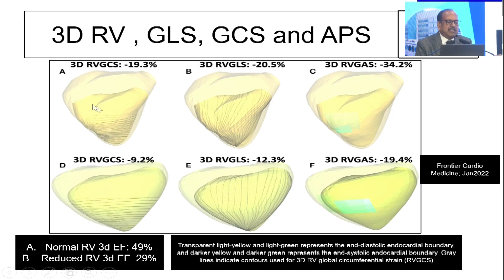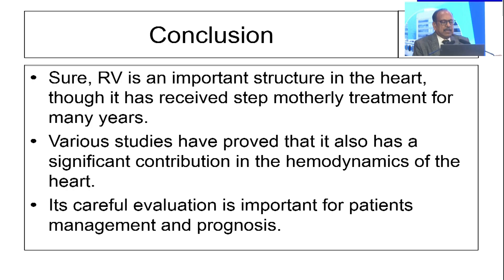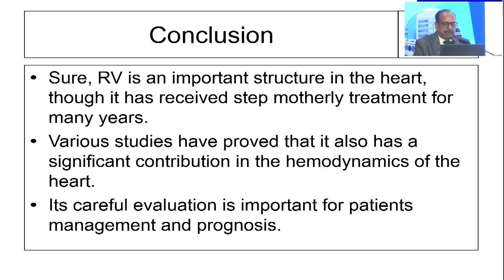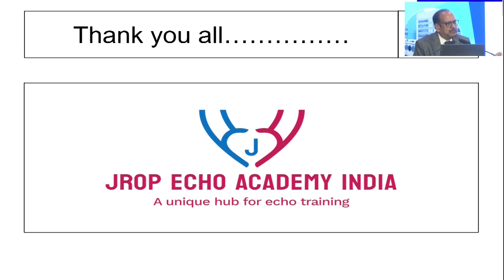I can show you how the RV behaves in different stages, whether pulmonary hypertension or other conditions. This image from January 2022 guidelines shows how the RV — with normal ejection fraction versus reduced ejection fraction — behaves in three dimensions. In conclusion, the right ventricle is an important structure that has received stepmotherly treatment for many years. Various studies have proved it has significant contribution in cardiac hemodynamics. Its careful evaluation is important for patient management, diagnosis, treatment, and prognosis. Thank you very much.